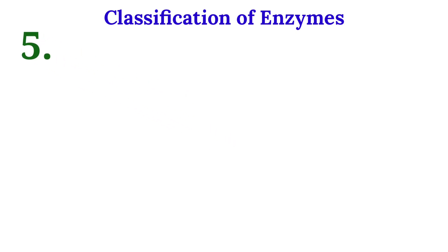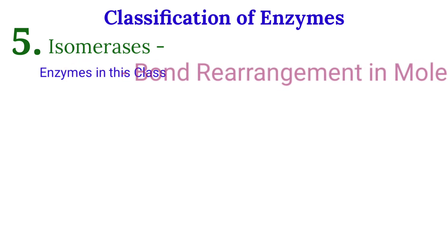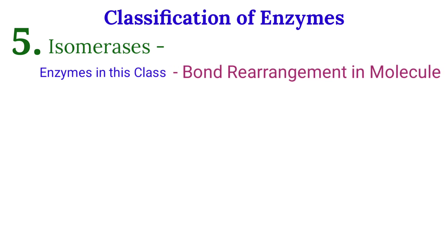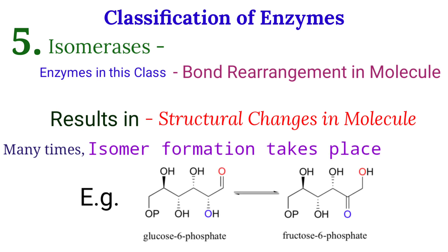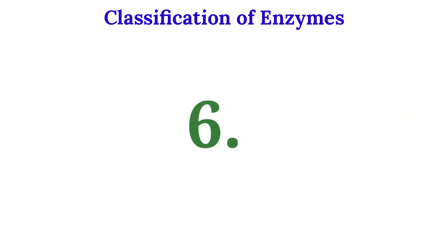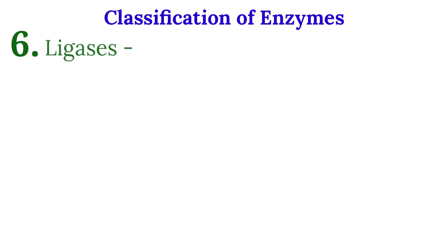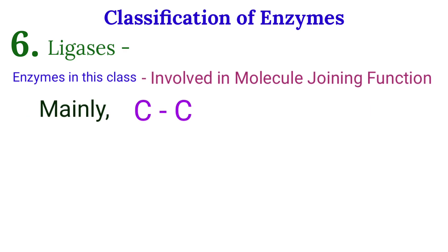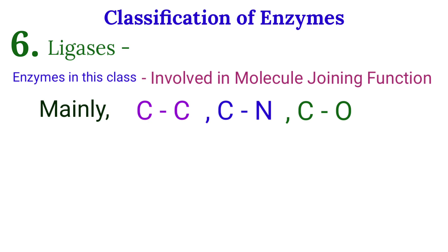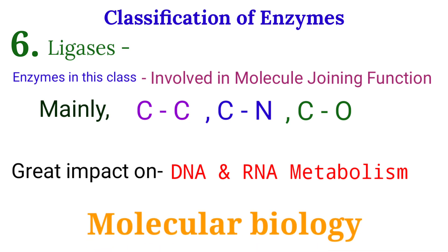The fifth class is isomerases. Enzymes in this class show bond-interchanging tendency, resulting in structural changes in the molecule. Many isomers form due to the activity of isomerases. The last class is ligases. Ligase enzymes perform molecule-joining functions, mainly joining different carbon atoms, carbon-nitrogen, or carbon-oxygen atoms together. They have great impact on DNA and RNA functions, to be discussed in molecular biology.